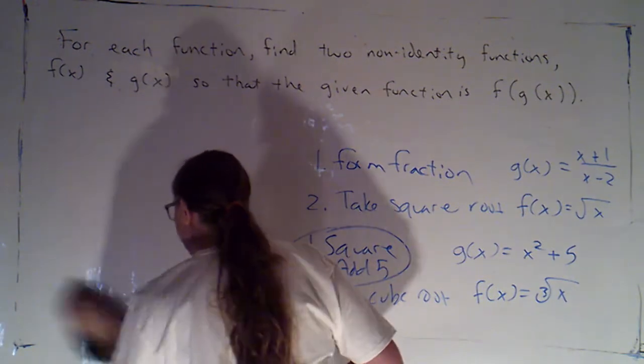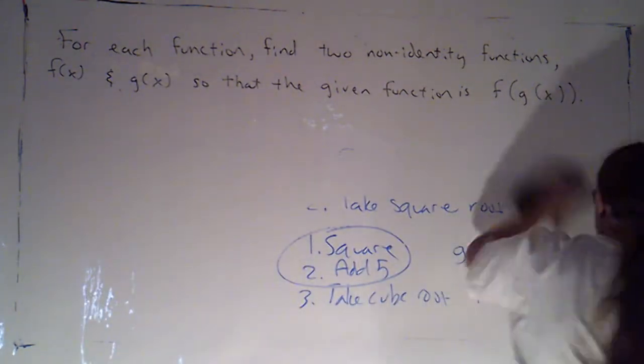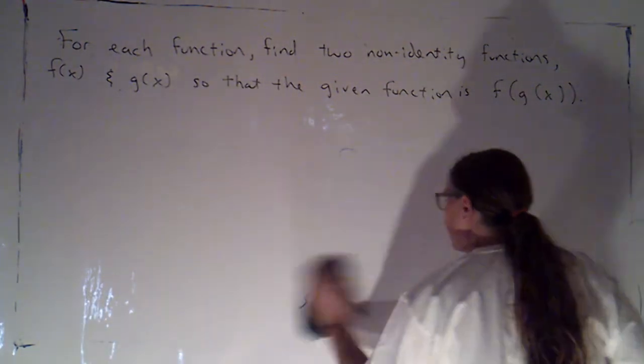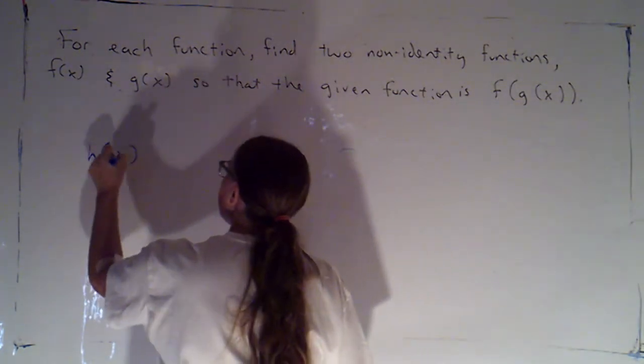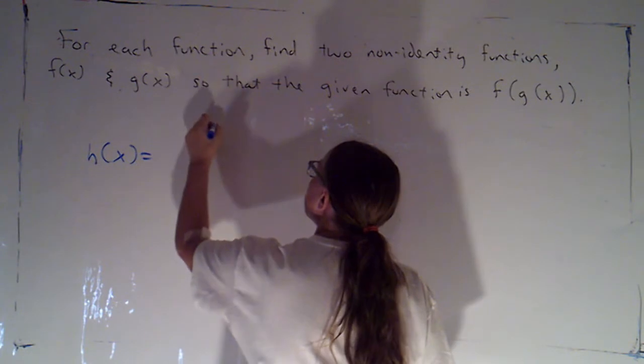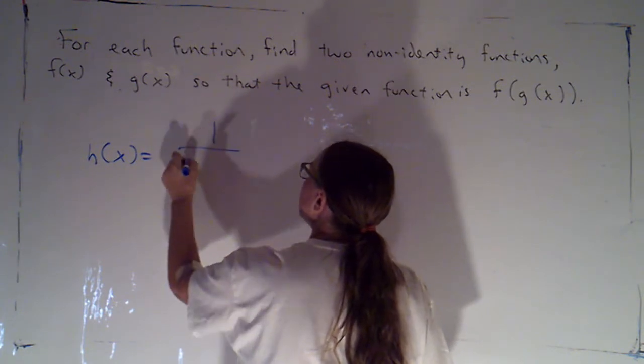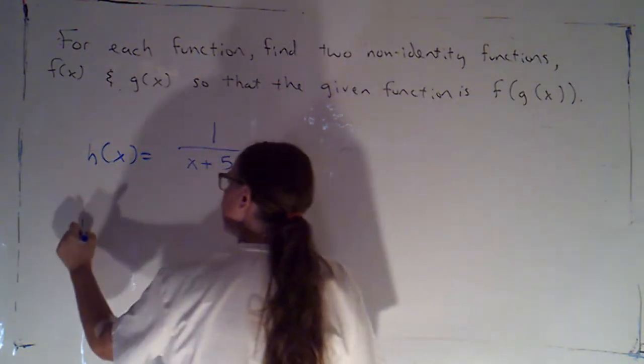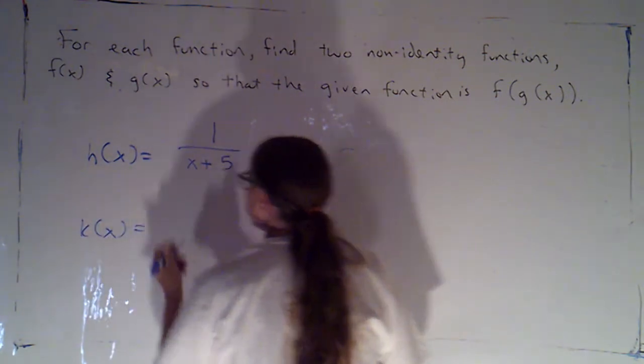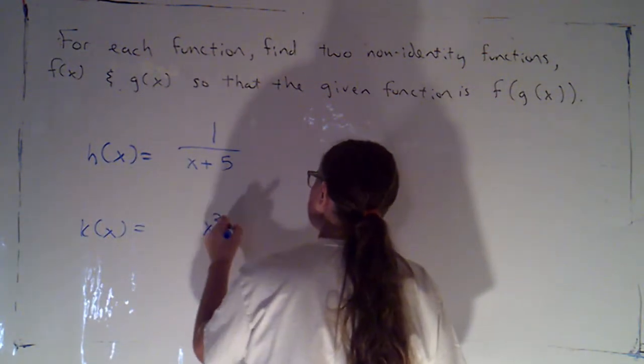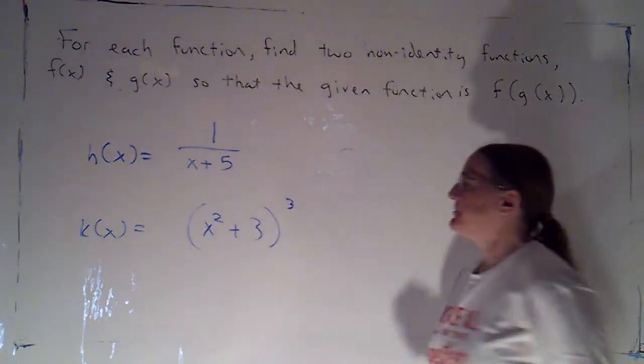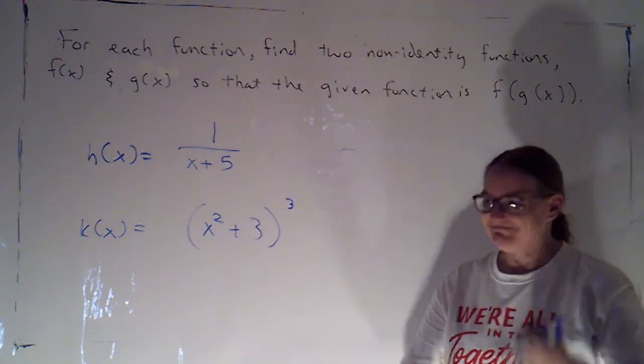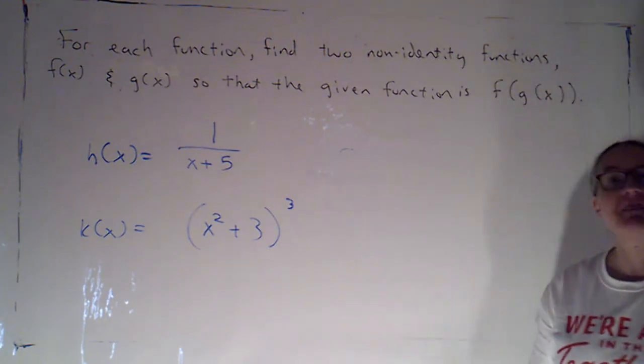I'm going to just write a couple up here on the board for you folks to try on your own. Give those a shot and then tune back in. Let's go with h of x equals 1 over x plus 5, and k of x equals x squared plus 3 cubed. Give those a shot, then tune back in.